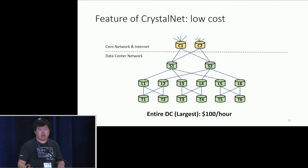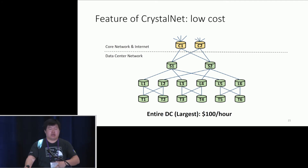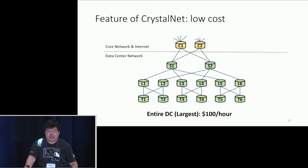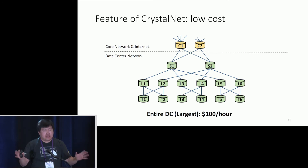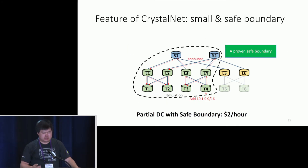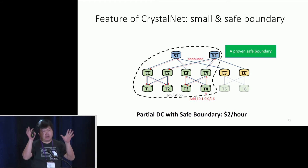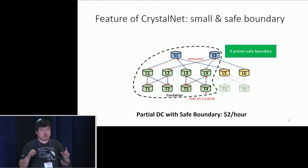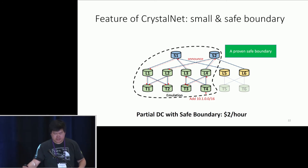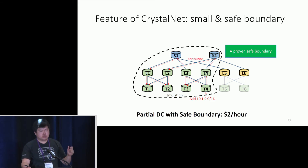Let's talk about cost. You might think that emulating a whole data center will cost a lot, but actually it doesn't. Given that containers are lightweight and cloud pricing is very cheap, even emulating the largest network costs only around 100 dollars per hour. What's even better is that if you only want to emulate part of the network, CrystalNet carefully designs a boundary of the emulation zone and caps the boundary conditions, guaranteeing that the results will be identical to the real network while significantly reducing cost.